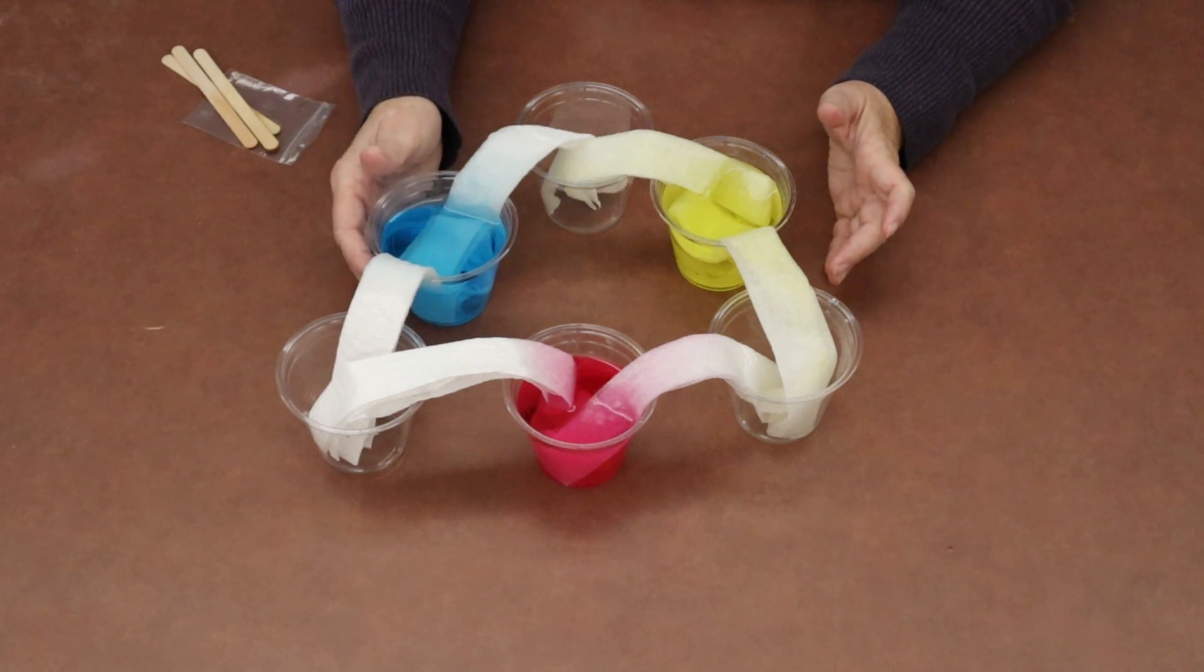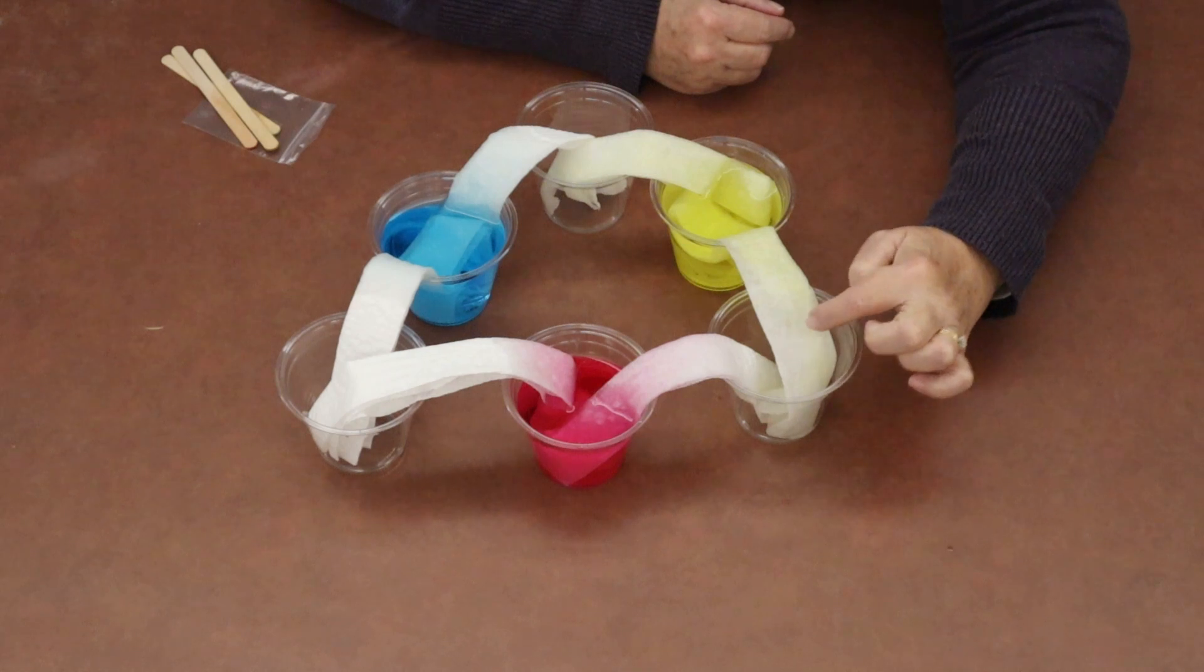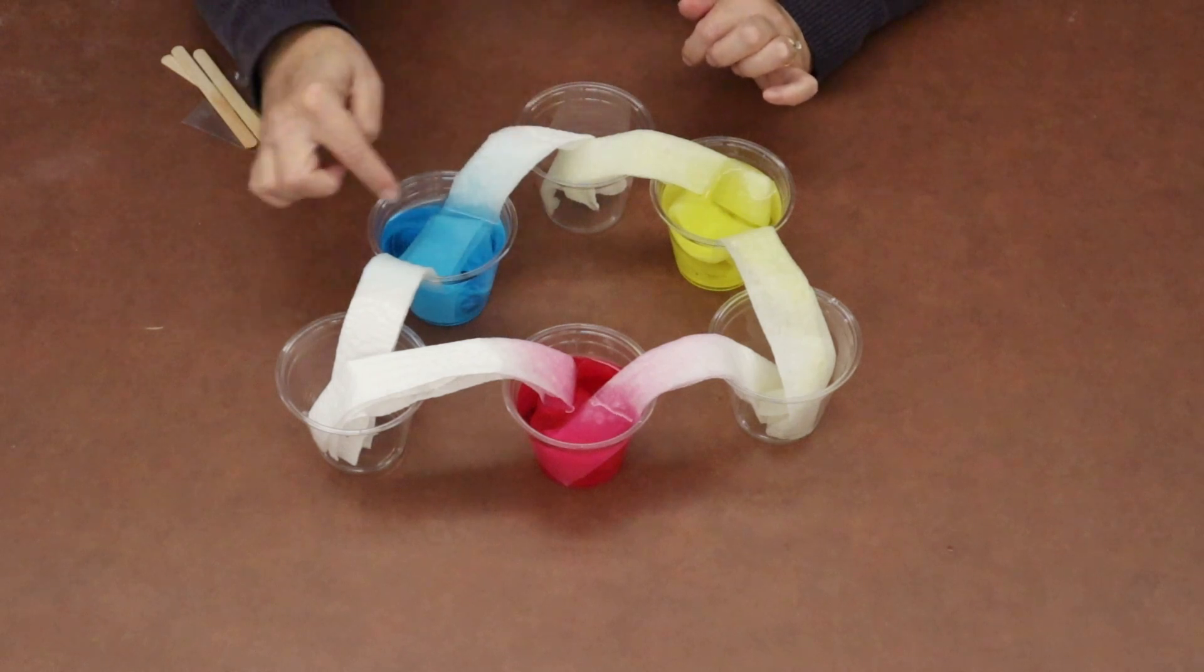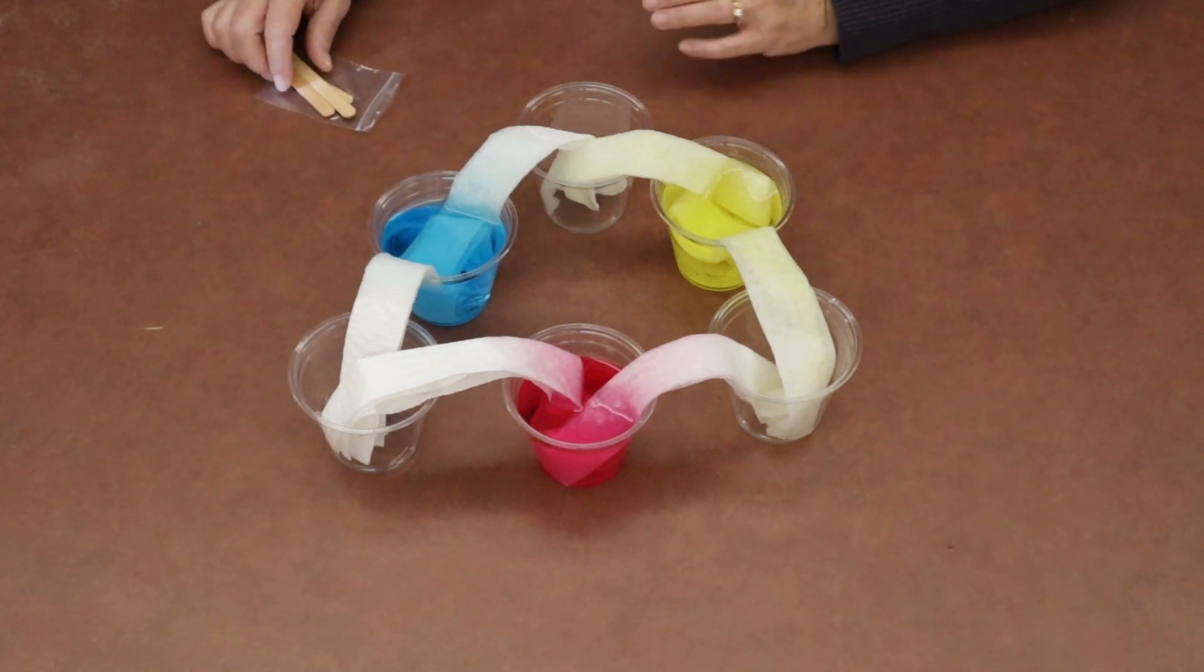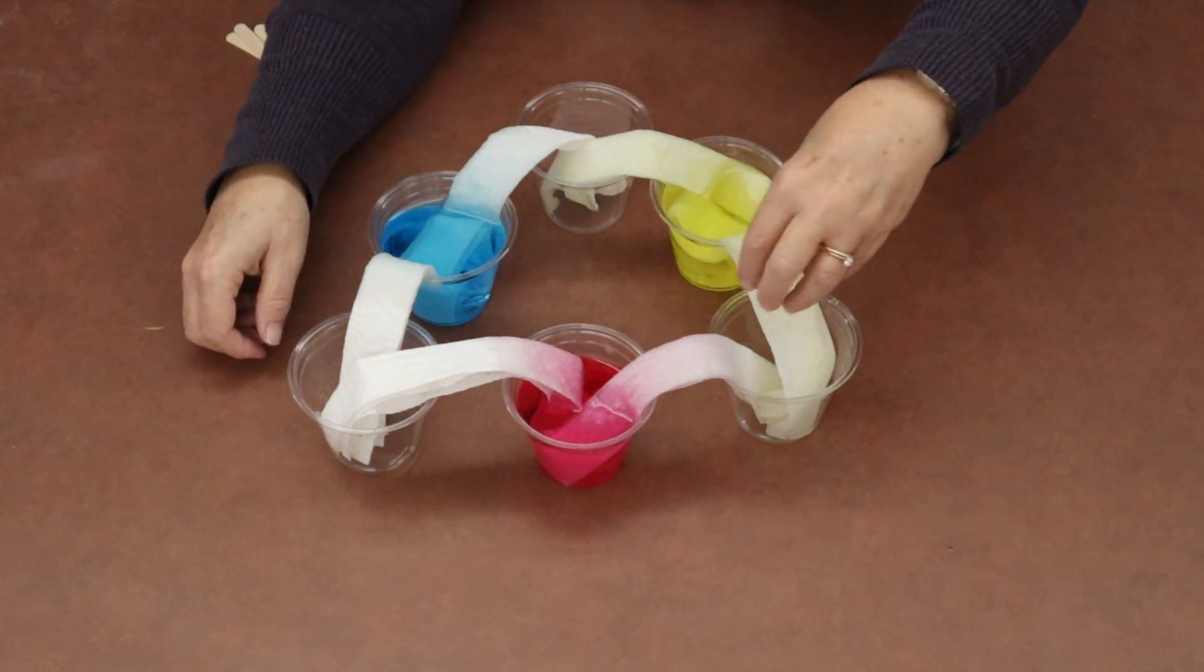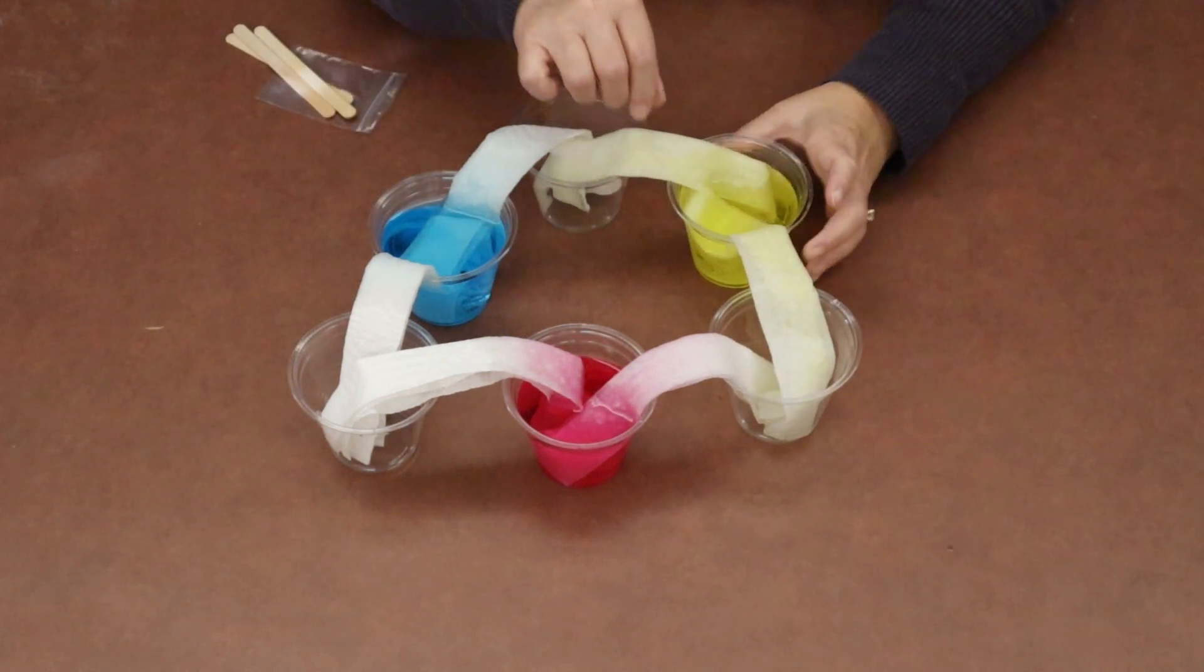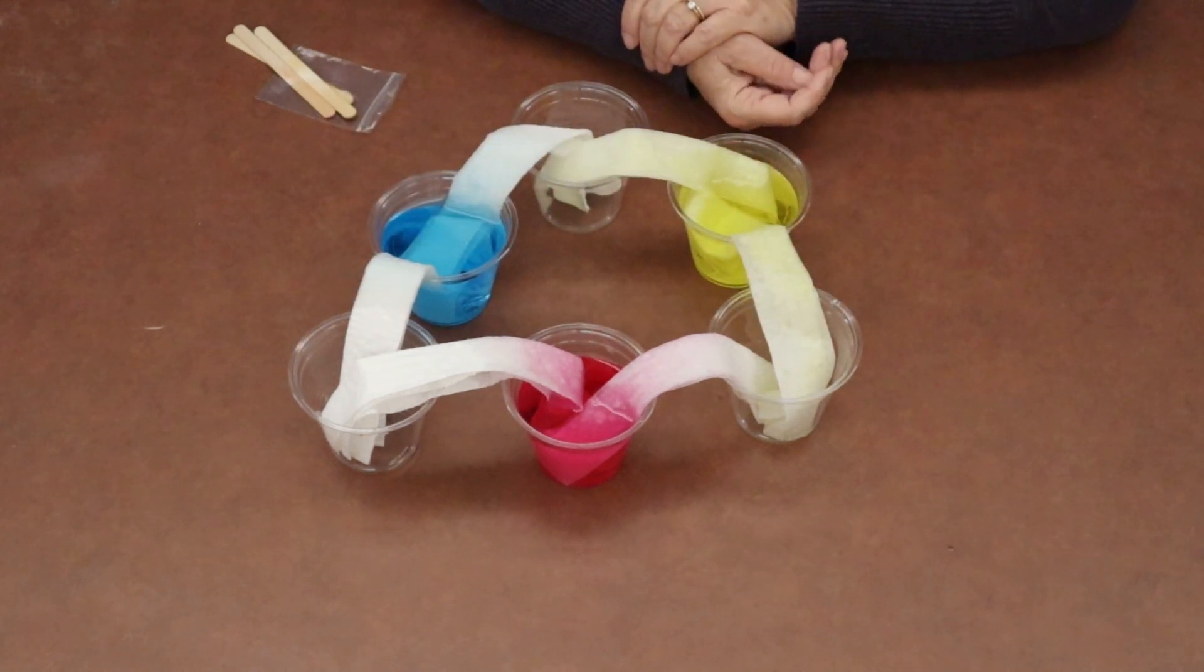We'll watch the colors run up the paper towel. I hope you can see the yellow is coming here, I've got red coming down this one, the blue is starting to come up. Then what's going to happen is ideally the water will travel down these paper towels, empty into the other empty cup, and mix with the other color next to it and make different color combinations.